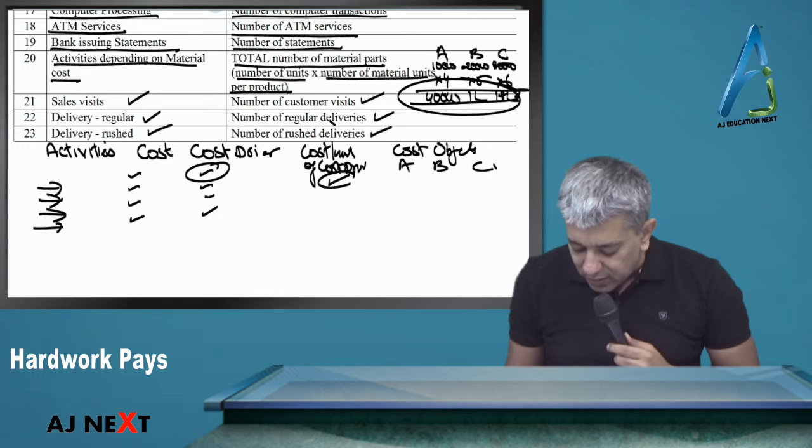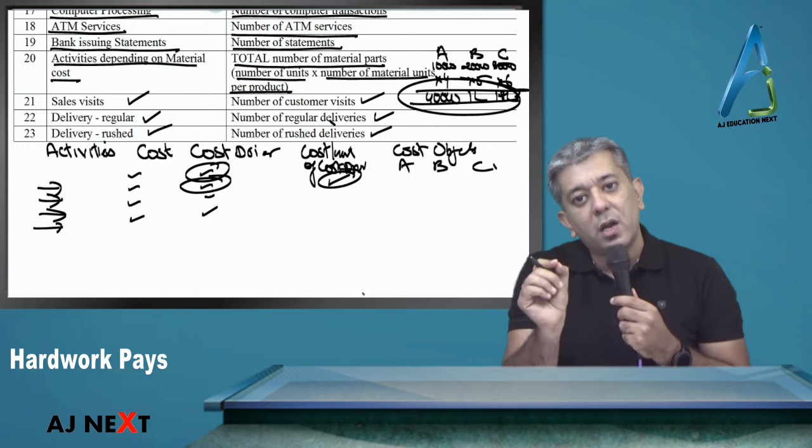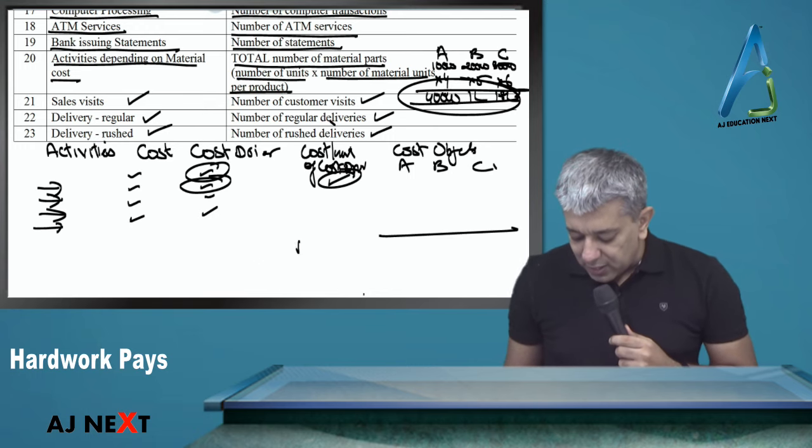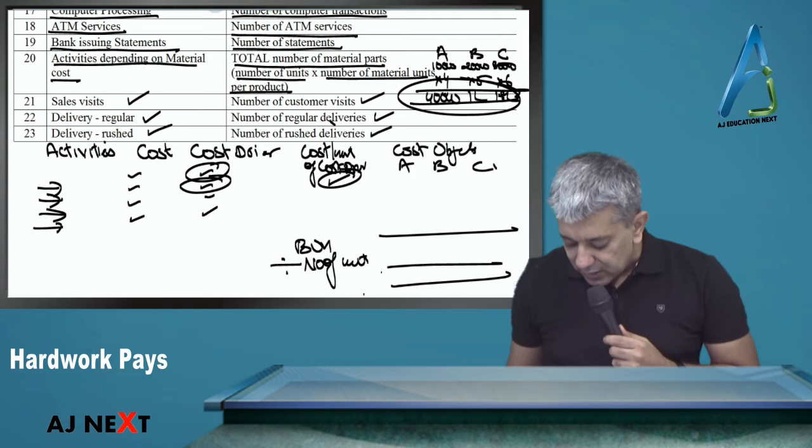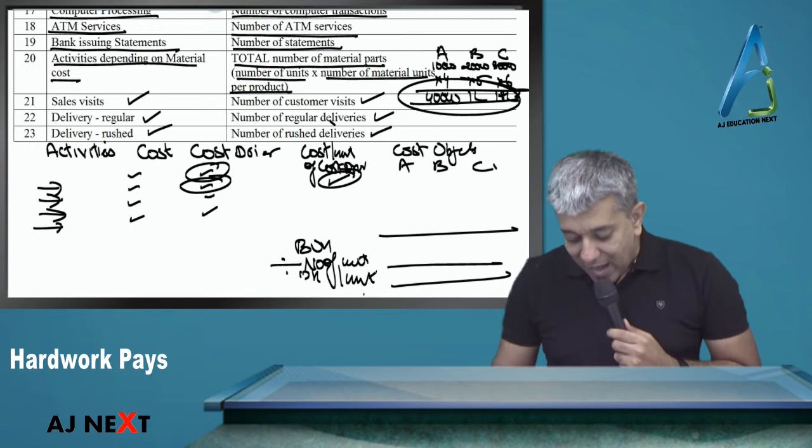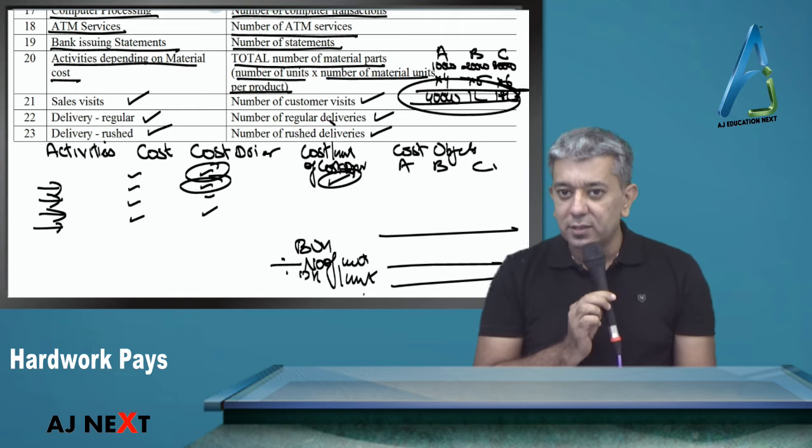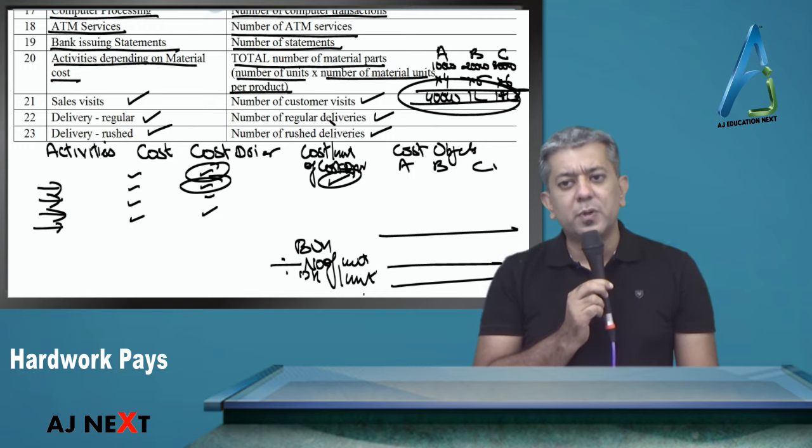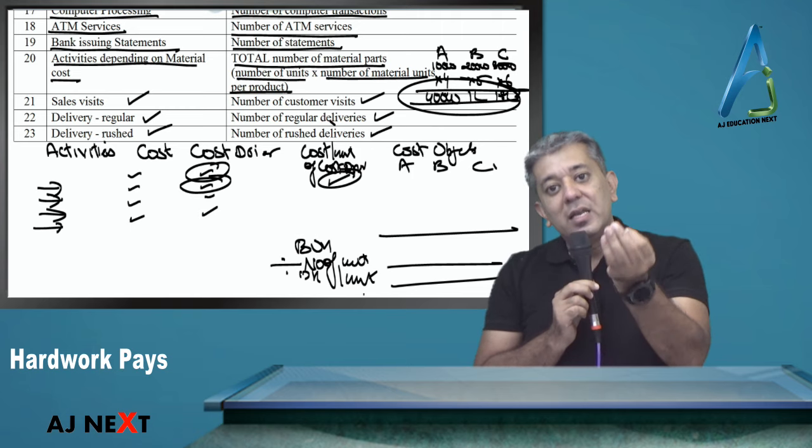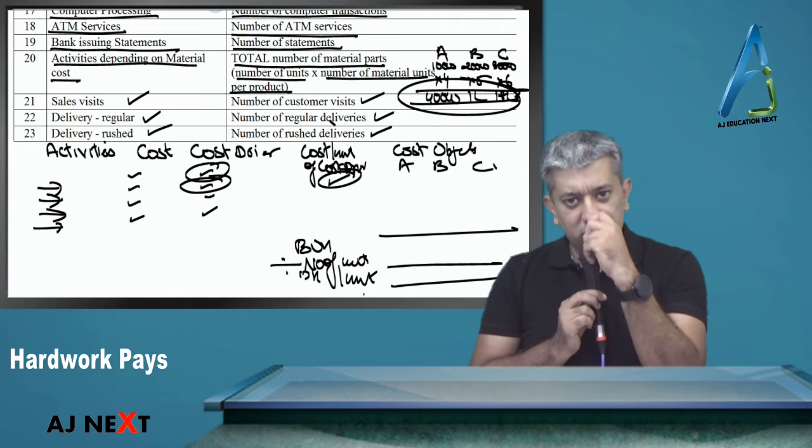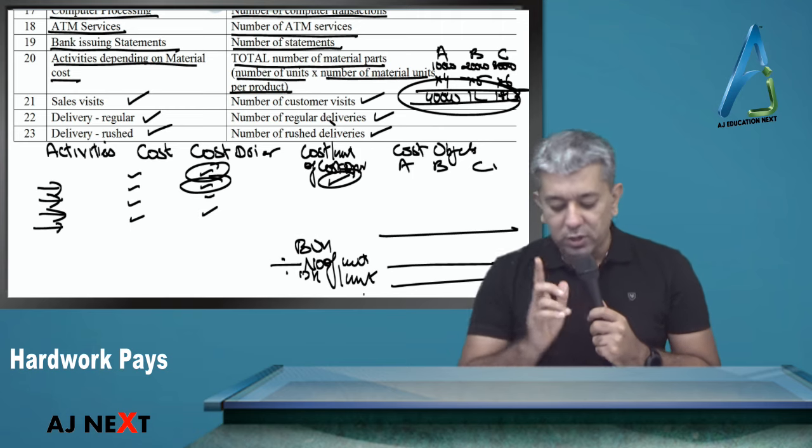Then make a column for cost per unit of cost driver. Then come the cost objects - your products, say A, B, C. Write all the activities, find out their cost, which is mostly given directly. For cost drivers, I just discussed. Cost per unit of cost driver - if machine hours is your cost driver, it becomes cost per machine hour. If trees planted is your cost driver, cost per tree, and so on. Once you do this, it gives you BOH. Divide by number of units to get overheads per unit.